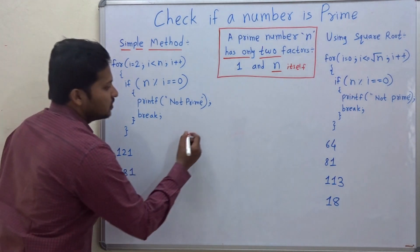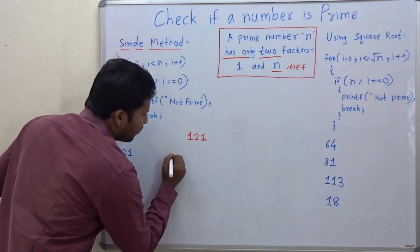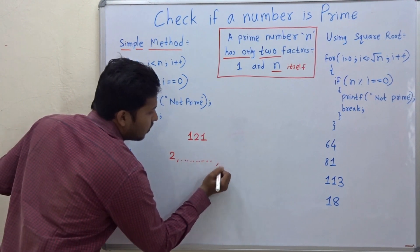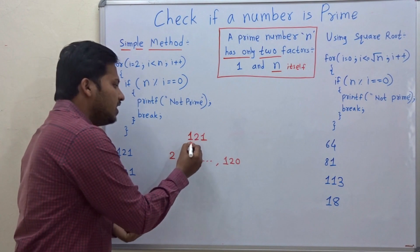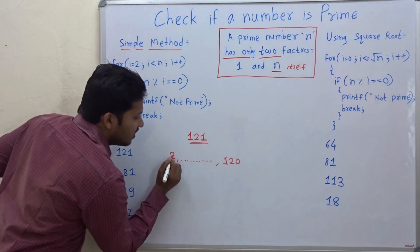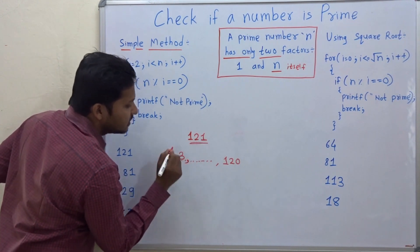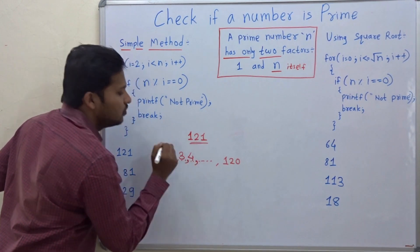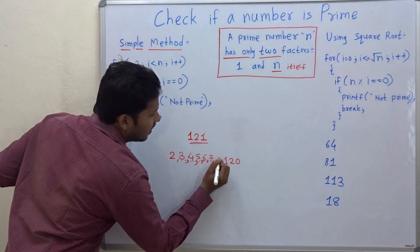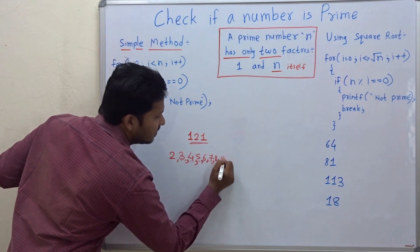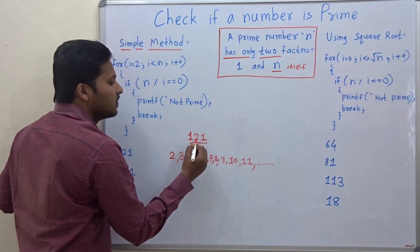Suppose you want to check if 121 is a prime number or not. You start from 2 up to 120 and divide 121 by each number. Check whether 2 divides 121 — no. Whether 3 divides 121 — no. 4 no, 5 no, 6 no, 7 no. Then we check 8, 9, 10, 11. Check whether 11 divides 121 — yes, it divides.